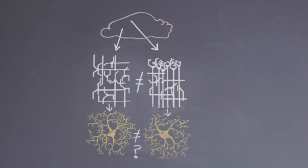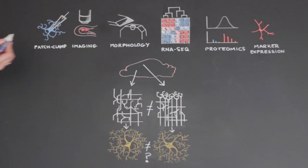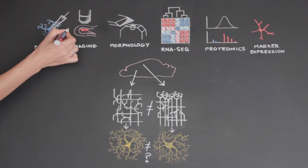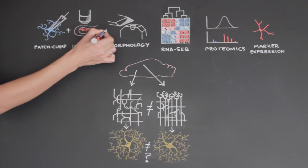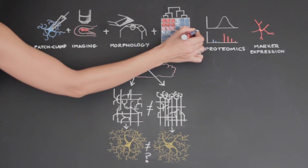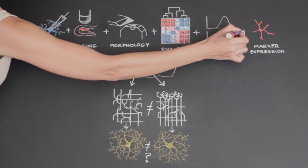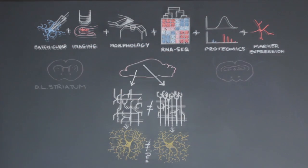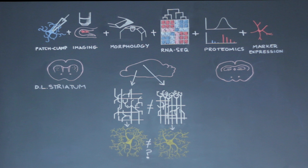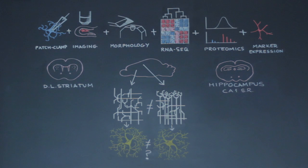To address this issue, we directly compared astrocytes from two distinct circuits. We comprehensively tackled astrocyte diversity using multiple approaches to study their molecular profiles at the level of RNA and protein, their morphology, and some aspects of how they work. We chose to compare astrocytes from two regions: the dorsolateral striatum and the hippocampus CA1 stratum radiatum.